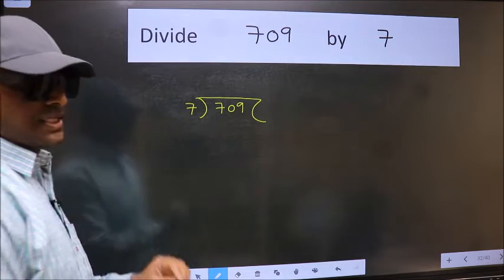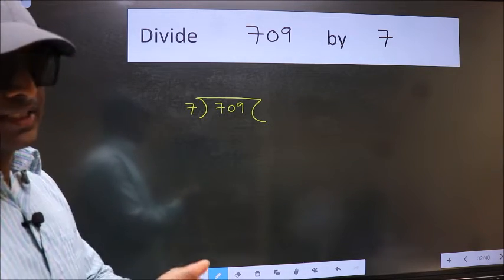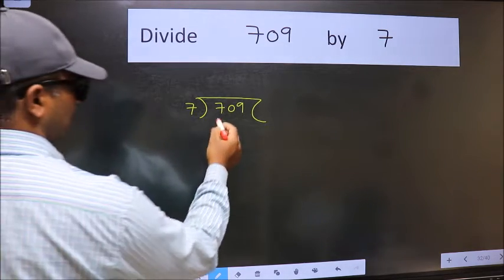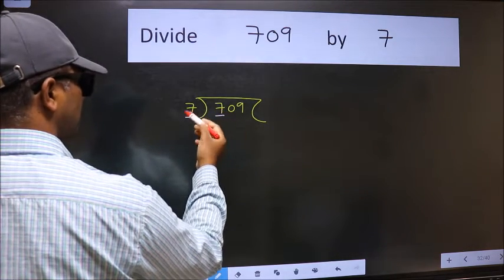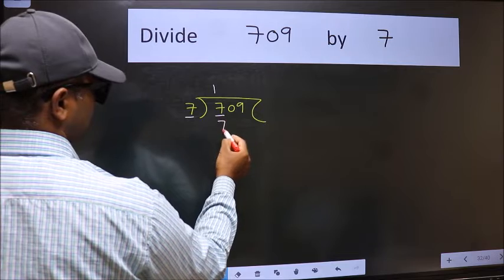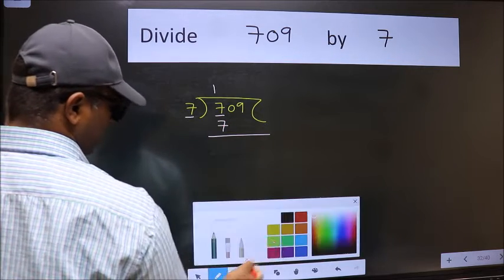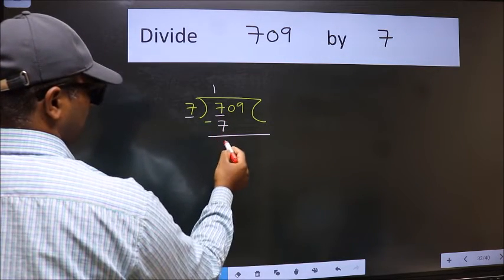This is step 1. Next, here we have 7 and here 7. When do we get 7 in the 7 table? 7 once is 7. Now we subtract and get 0.